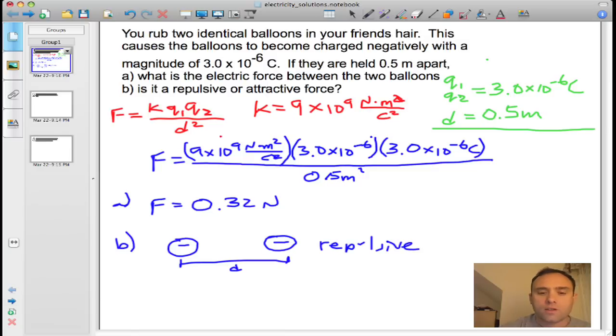If these charges had been opposite charges, like positive and negative, that would be an attractive force. If there are two positives, it would be repulsive again. Okay, so that's the solution. Good luck with that, and I'll see you next time.